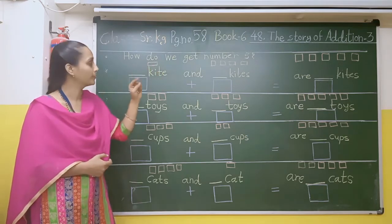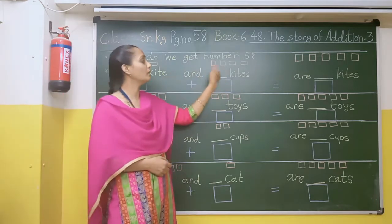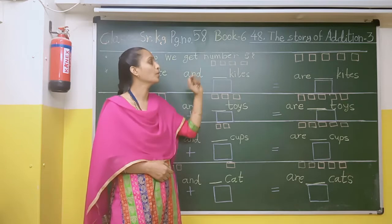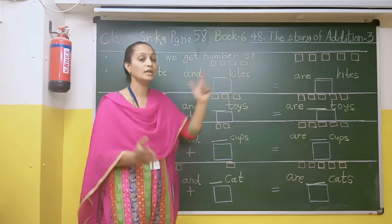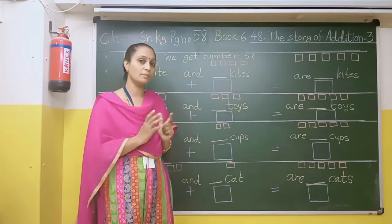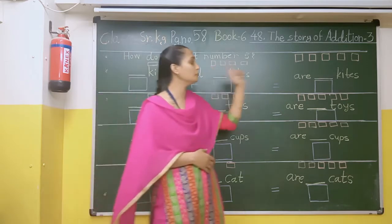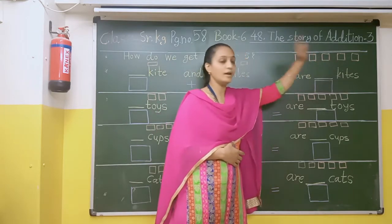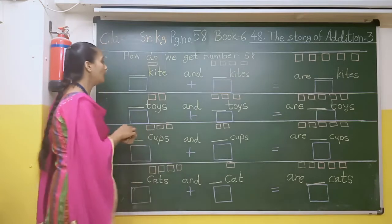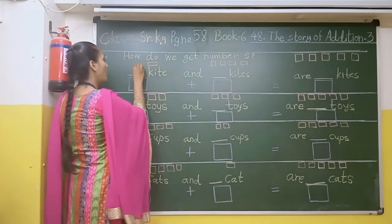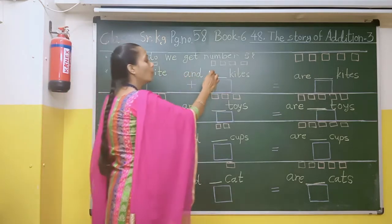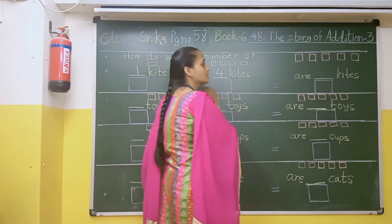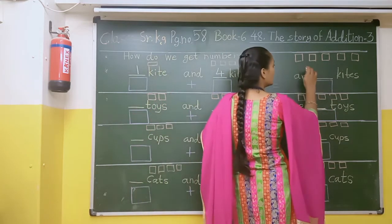It is 1, and if you get another 4 kites: 1, 2, 3, 4. Then there will be totally 5 kites: 1, 2, 3, 4, and 5. So here I am going to write 1 and then 4 kites. How many total will it be?